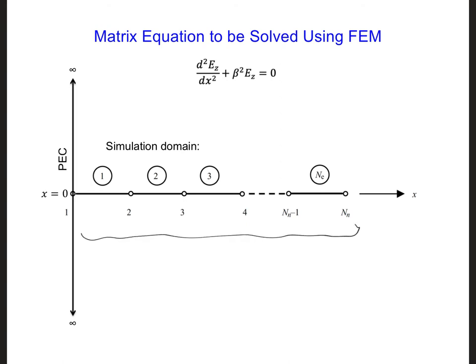Ultimately using the finite element method we want to develop and solve a matrix equation of the form k, which is a coefficient matrix, times ez, where ez is an array that holds the values of the unknown at each node in the grid from node 1 to node nn, where nn is the number of nodes in the grid, and this is equal to b, the right hand side array.